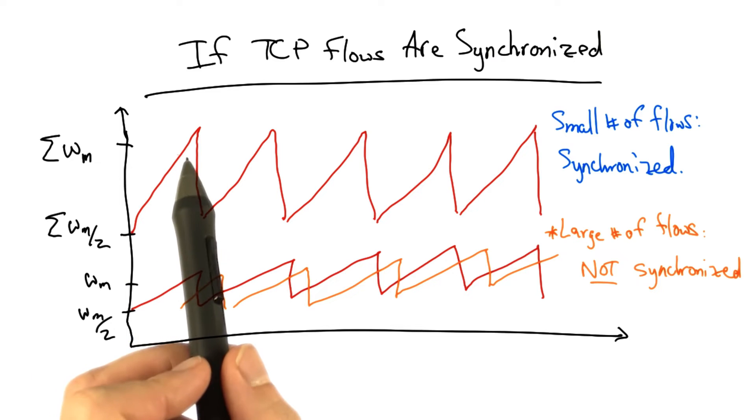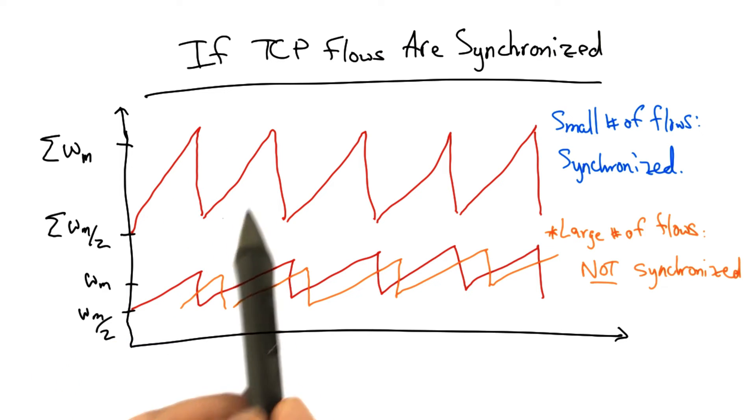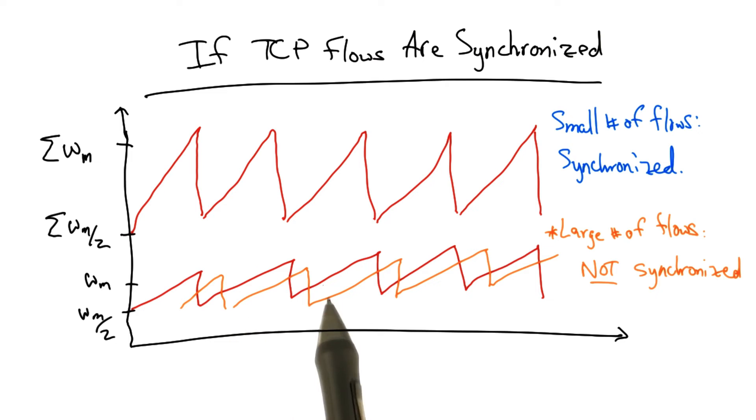As a result, instead of seeing a huge sawtooth that's the sum of a bunch of synchronized flows, the aggregate, instead, might look quite a bit more smooth as a result of the individual flows being desynchronized.